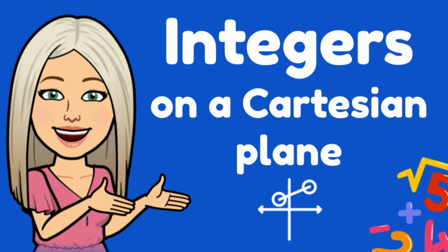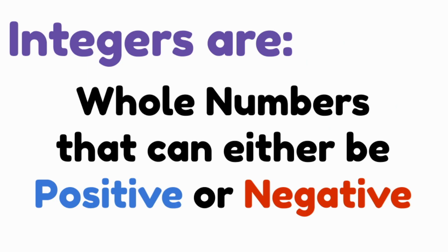Integers on a Cartesian plane. Integers is just another name for whole numbers that can be either positive or negative — no fractions and no decimals.